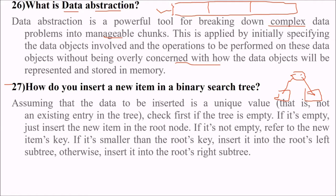Assume that the data to be inserted is a unique value not already existing in the tree. First, check if the tree is empty. If it is empty, insert the new node in the root node. But if it is not empty, which is often the case, we refer to the new item's key. If it is smaller than the root key, we insert it onto the root's left subtree. Otherwise, we insert it onto the right subtree. This is recursive until it reaches the correct point.